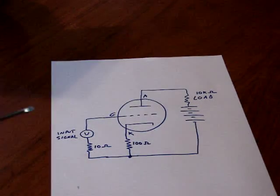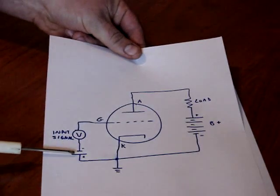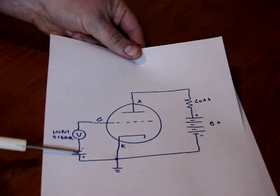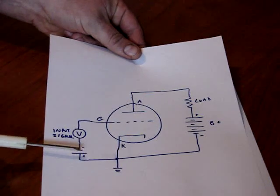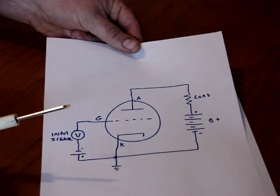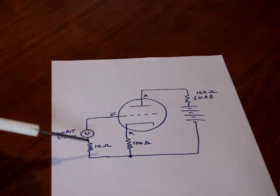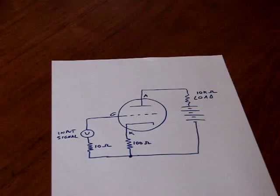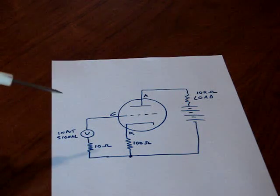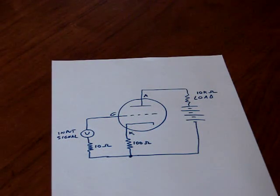So this would function exactly the same as this, except there's one less power supply required. So this is a basic, basic tube amplifier. And these values are probably nowhere near what would be actually encountered. And there would have to be much more components in circuitry in order to get this to function.